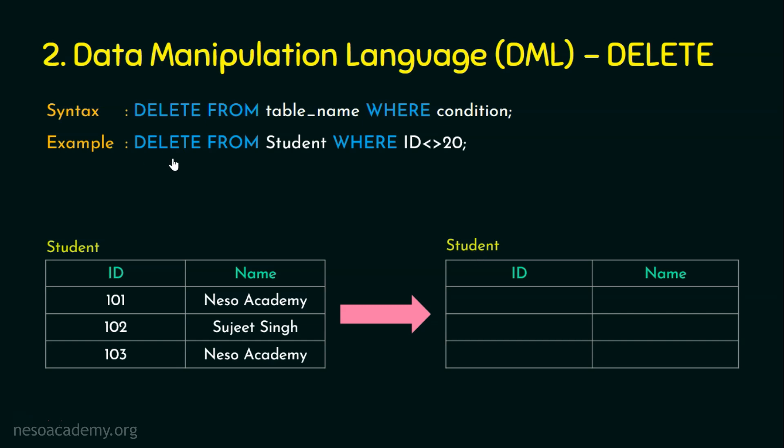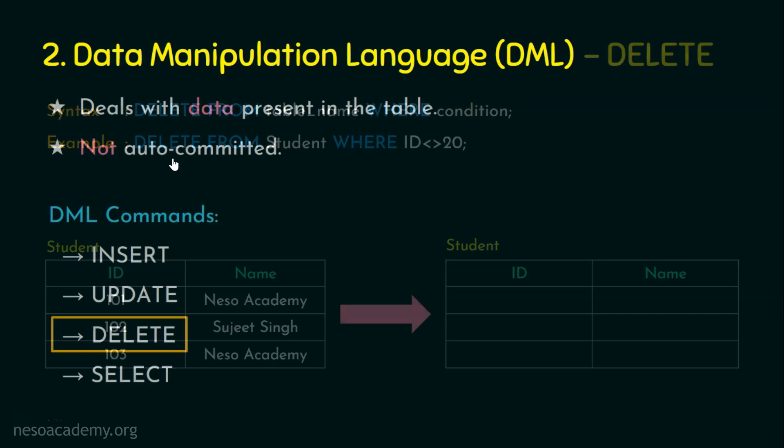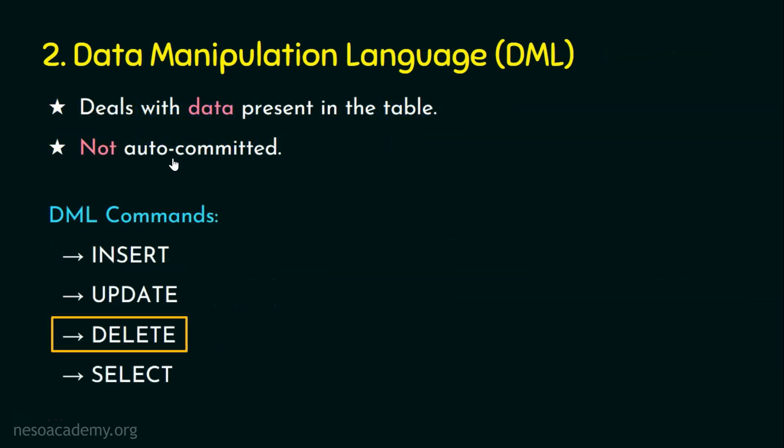The difference between the DELETE DML command and the TRUNCATE DDL command is that TRUNCATE will be faster than DELETE. So we are done with the third DML command, delete. Now we will focus on the last one, SELECT. In some conventions, select will be under DQL, the data query language, but here we are using select under DML itself.